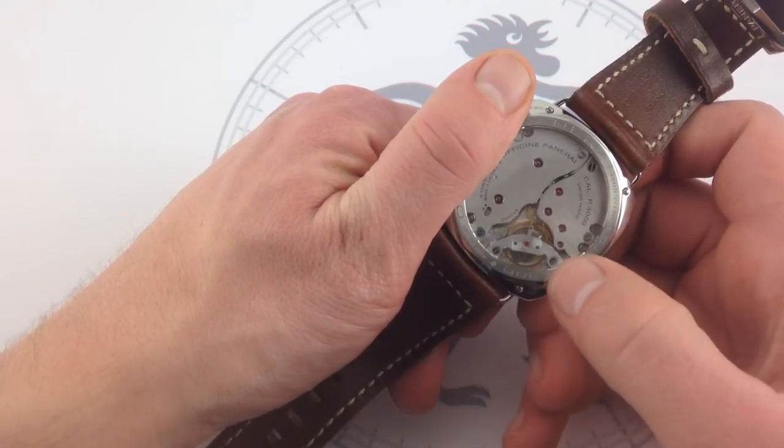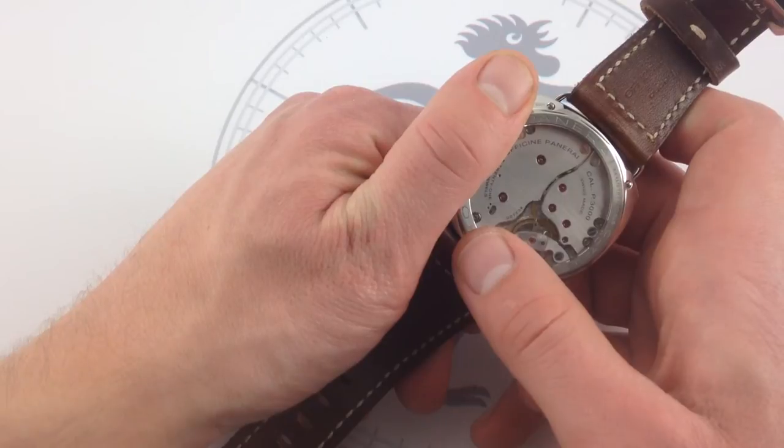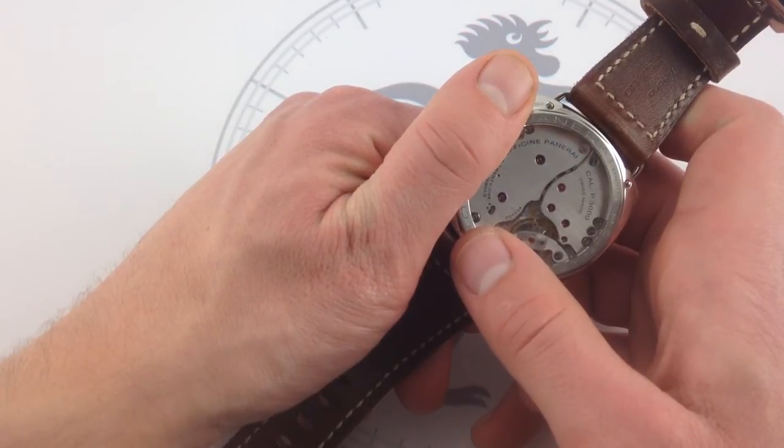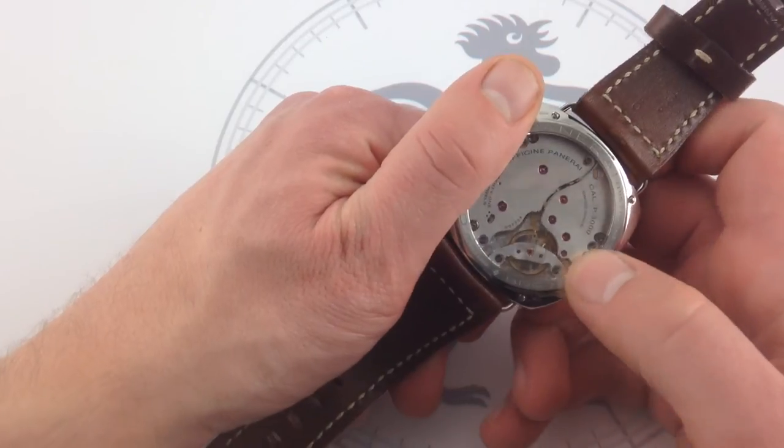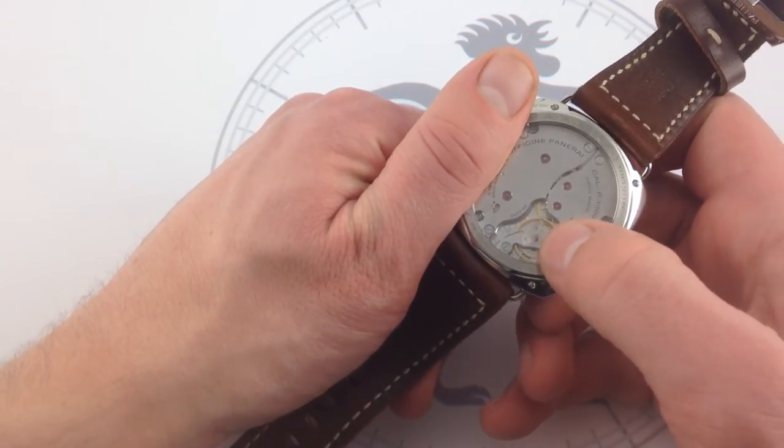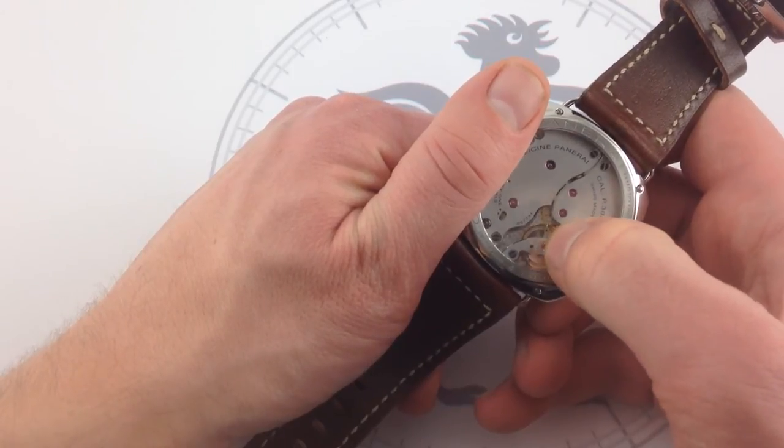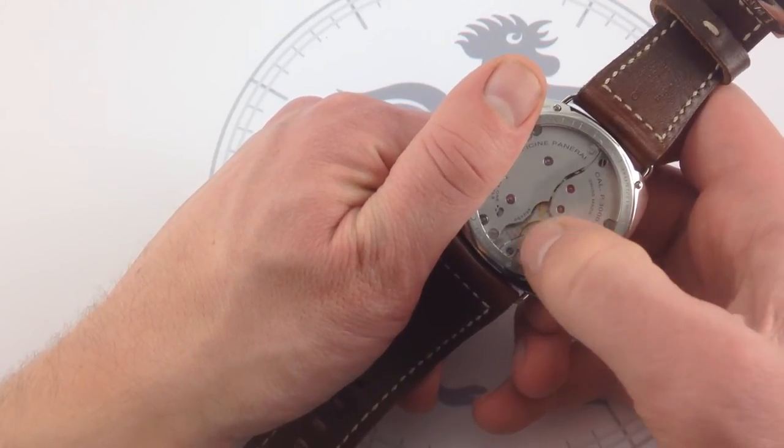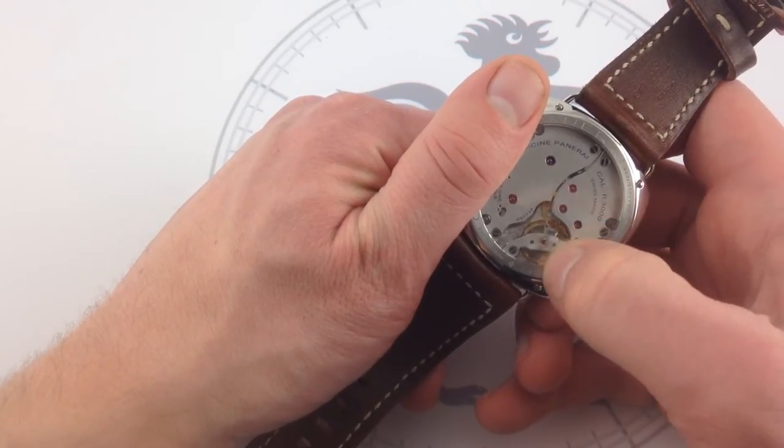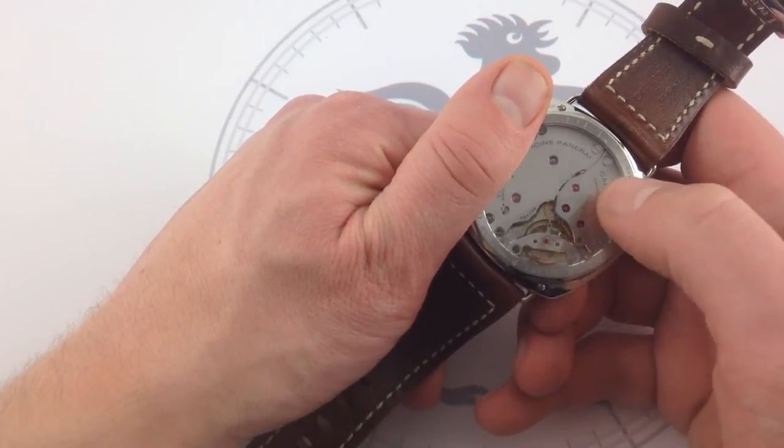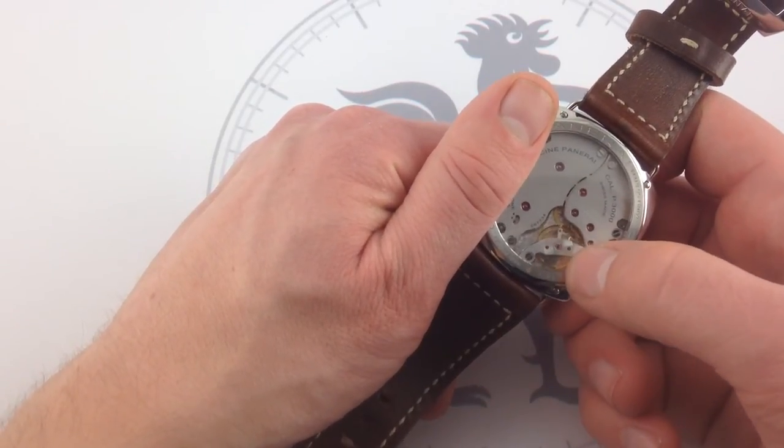You can see two anchoring screws for a full balance bridge. Rather than having it just be single-sided and cantilevering out like it did in the historic watches, Panerai anchors this balance on both sides. Better for absorbing shock. It also features a free-sprung balance, which means that the stud holder can't move. It's not a moving regulator. All the adjustments are made to variable inertia blocks that are on the balance wheel itself. So if you strike it, if it shakes, that index can't move and change the timing of the watch.